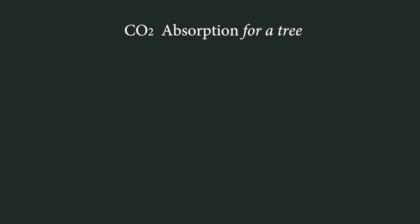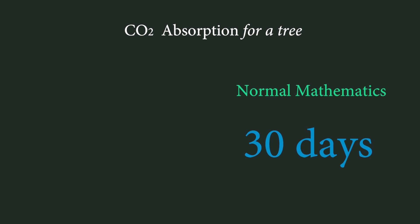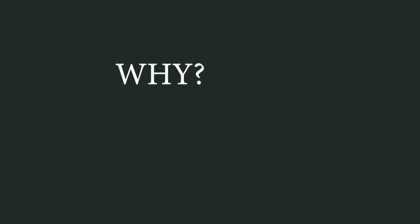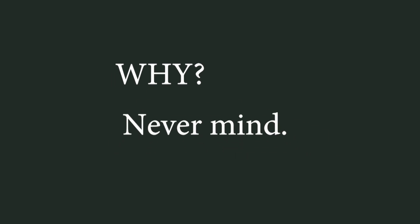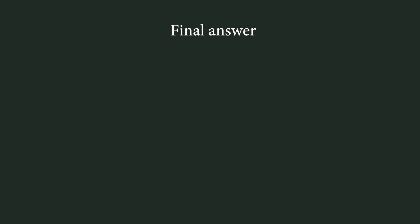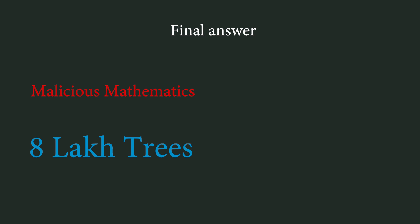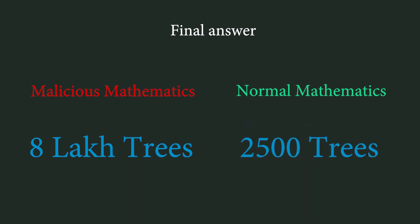The Rally is a 30-day drive. So how many days worth of carbon dioxide absorption for a tree should we consider? Naturally, 30 days. Malicious mathematics says one day. Why? Never mind. And thus we have the final answer. According to malicious mathematics, 8 lakh trees need to be planted to compensate for the emissions. In the real world, we actually need 2500 trees.